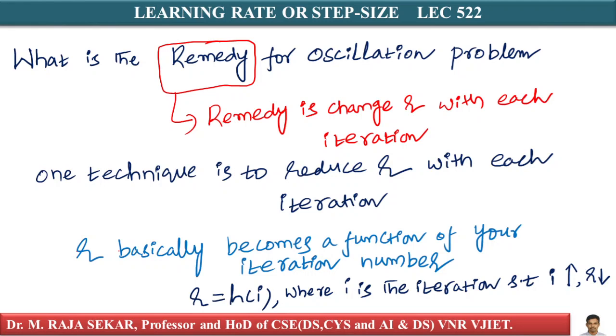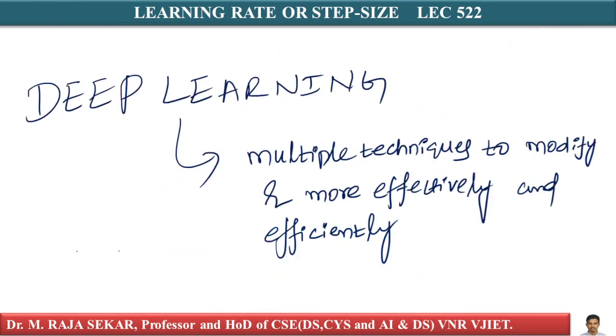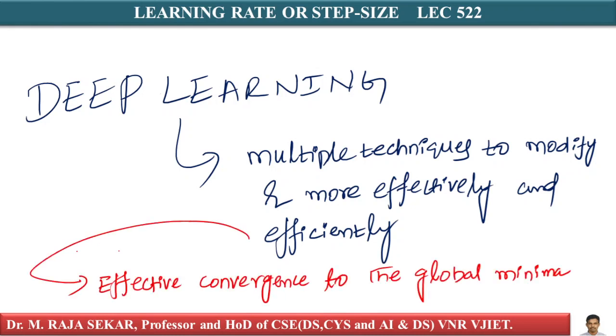When we learn deep learning, we will learn multiple techniques to modify r more effectively and efficiently. There are some modifications for simple gradient descent which work brilliantly well even for extremely large optimization problems. For now, the simple idea that r needs to change in each iteration is good enough for standard machine learning algorithms. For deep learning, we will learn some interesting optimization on how to change r efficiently for effective convergence to the global minima.